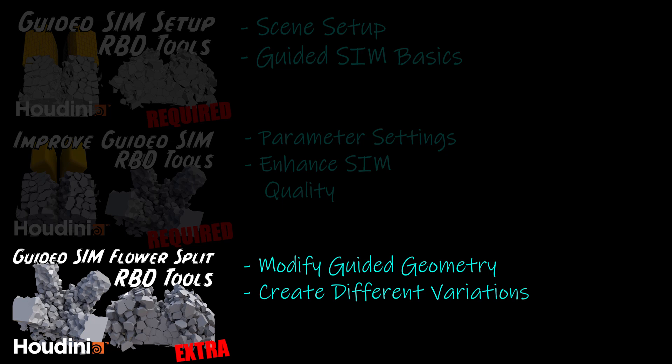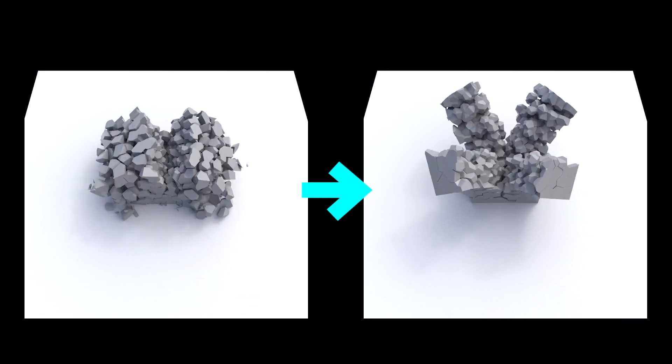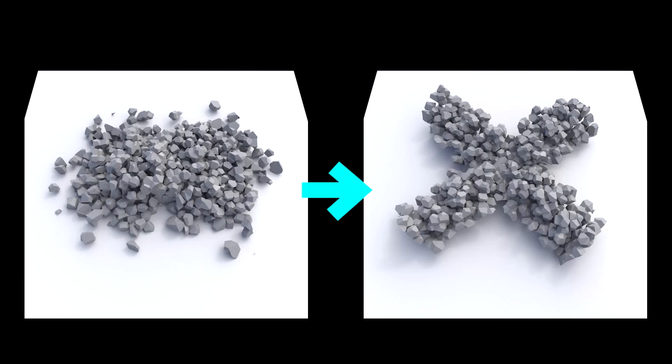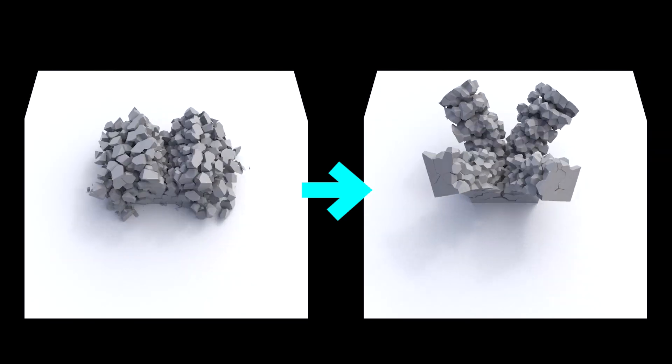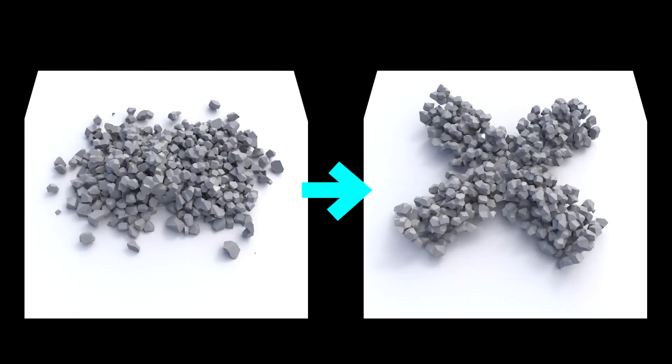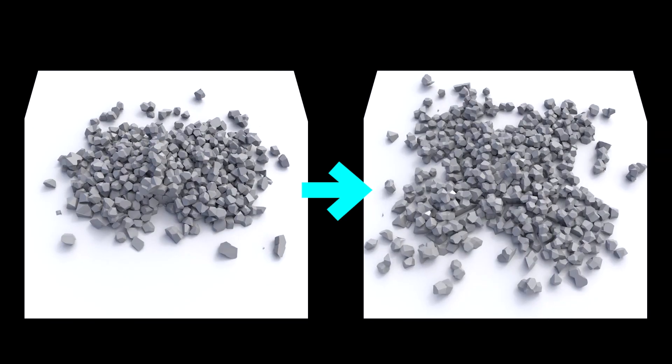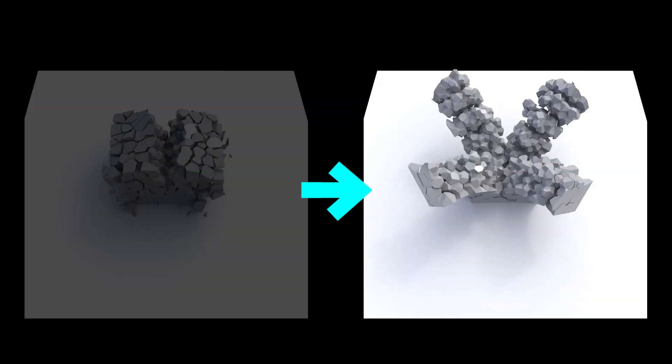This is an extra video I made to demonstrate how easy it is to create a new type of destruction scene just by modifying the guiding geometry. We're going to go from a banana splitting destruction scene to a flower splitting effect. I'm going to show you how to get from this to this by making just a few simple changes.